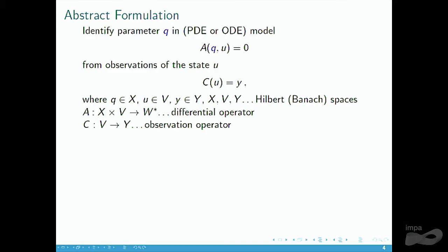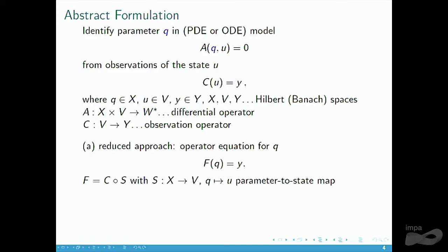Operators A and C will be the model operator and the observation operator in the following, mapping between Hilbert or Banach spaces. In the classical reduced approach, one eliminates one of these variables by using the parameter-to-state map S that maps Q to U such that the model is satisfied. One then plugs this into the observations to get the forward operator F, equates F(Q) to Y, and then one has noisy data Y and so forth.